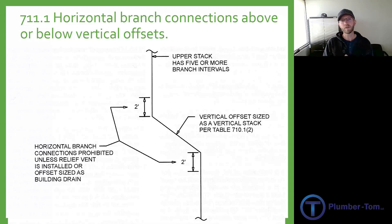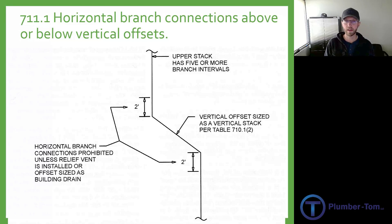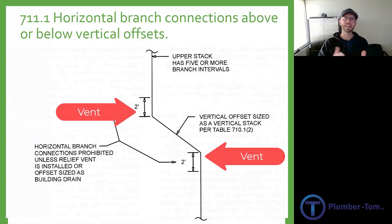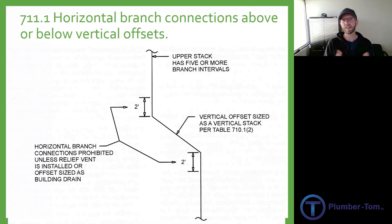There is another note in 7-11.1.1 which talks about omission of vents for vertical stack offsets. When we get into chapter 9 we learn that these offsets need vents to help them breathe and help that flow. But this omission of vents refers to the option that you can just increase the size of the pipe. If you size it as a building drain it's going to be bigger, which gives more airflow inside of it and you would not need to provide vents.